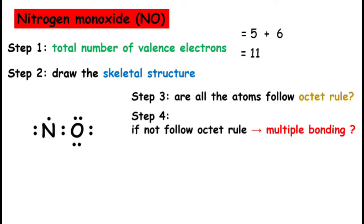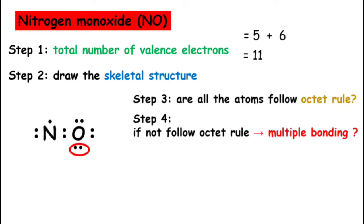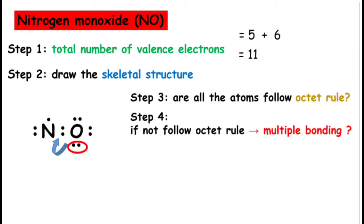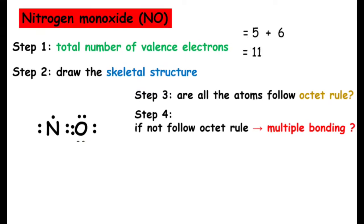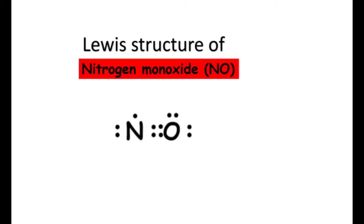That's why we have to go to step three and step four. In order to fulfill the octet of the nitrogen atom, we have to move the electron from the terminal atom to form a double bond. Therefore, the Lewis structure of nitrogen monoxide is like this.